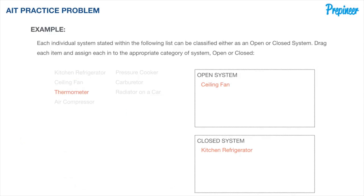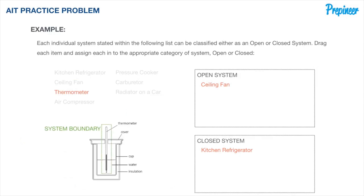What about a thermometer? Here is a basic schematic with the system boundary shown. A thermometer is supplied heat from its surroundings to the thermometer bulb, but no mass is actually transferred. Therefore, we would place the thermometer into the closed system category.